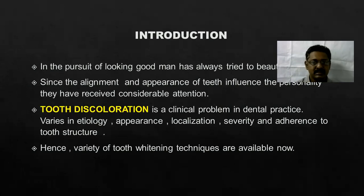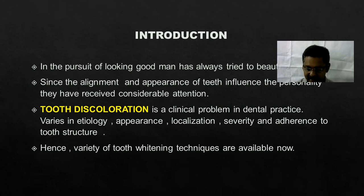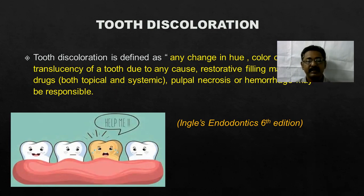So what is tooth discoloration? It is a clinical problem in dental practice. The various etiology, appearance, localization, severity, and adherence to the tooth structure — a variety of tooth whitening techniques are available. Tooth discoloration is defined as any change in hue, color, or translucency of the tooth due to any cause, restorative filling materials, drugs, pulp process, or hemorrhage.